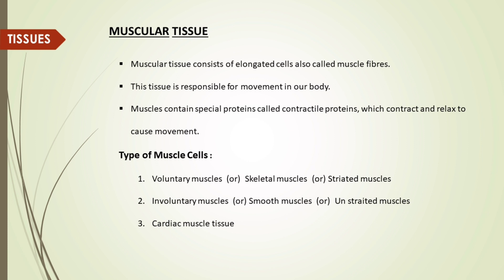Types of muscle cells: first one is voluntary muscle or skeletal muscle or striated muscle; second one is involuntary muscles or smooth muscles or unstriated muscles; third one is cardiac muscle tissue.